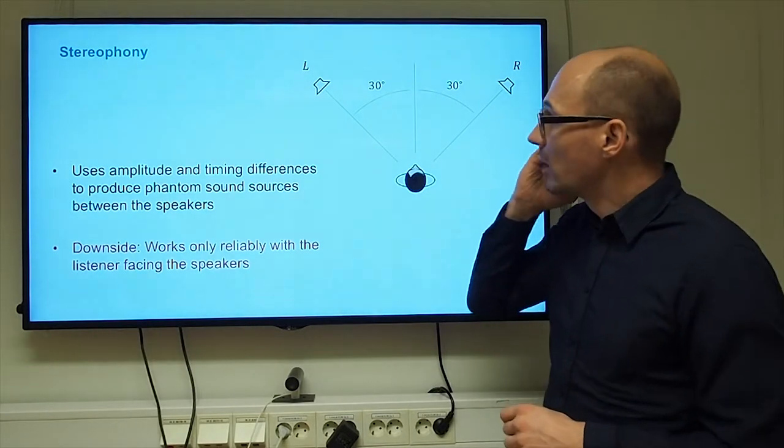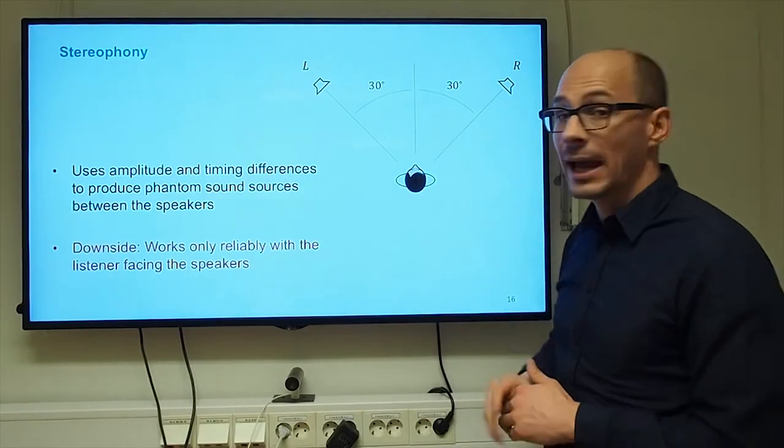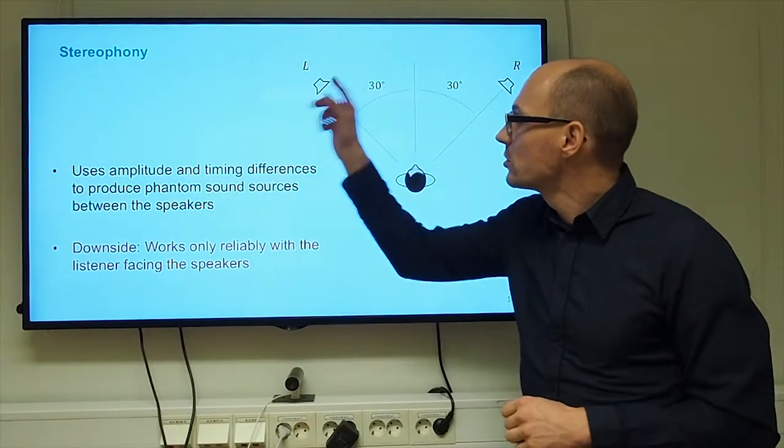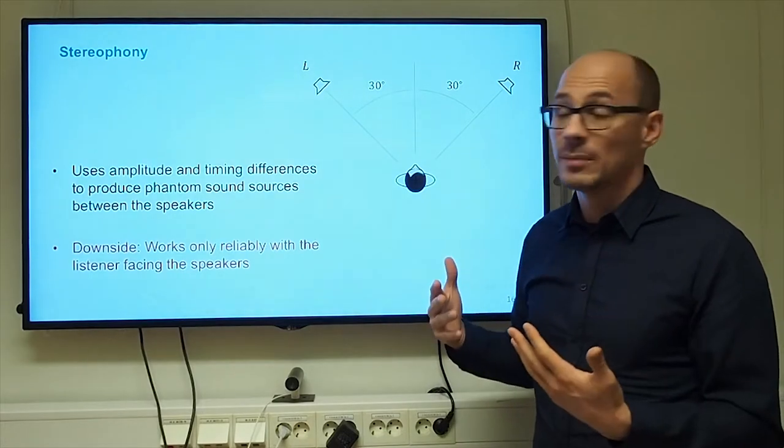If you would like to render or make the user perceive a sound source that is not strictly in the center between the two loudspeakers, you change the relative amplitudes of the signals that you play through the loudspeakers or you change the timing.